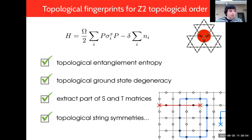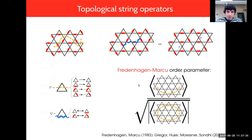For example, topological entanglement entropy works out to log 2 as you would expect. We could observe a topological ground state degeneracy on the cylinder. We were even able to extract part of the S and T matrices whose results were consistent with Z2 topological order. I want to focus on a nice feature which is that we can identify the topological string operators.